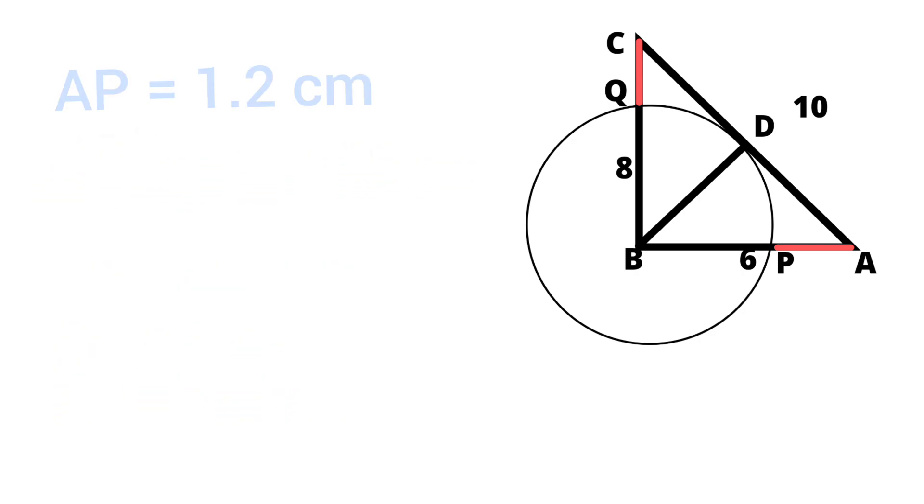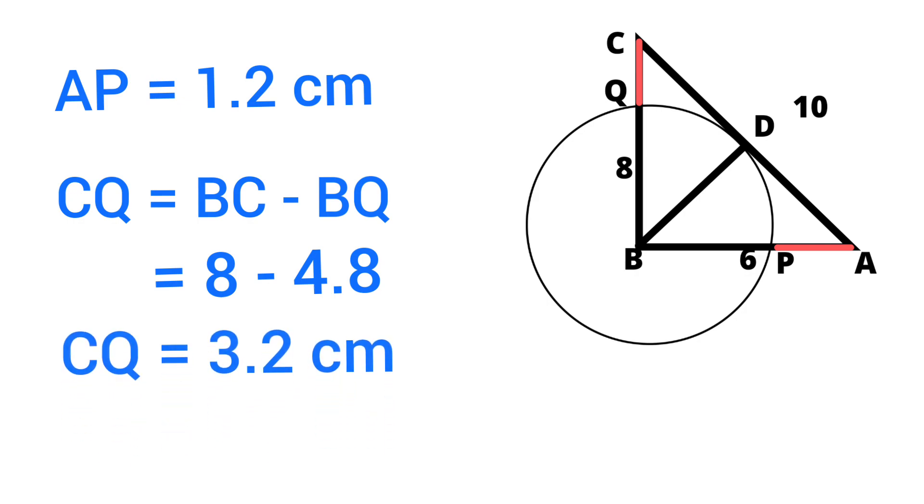On the other hand, length of CQ equals BC minus BQ. The length of BC is 8 centimeters minus 4.8, which equals 3.2 centimeters.